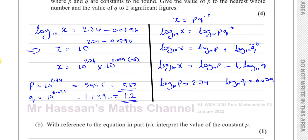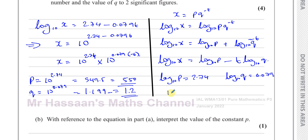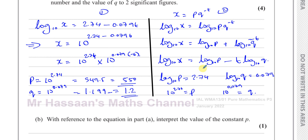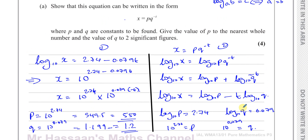Now we compare: log base 10 of p equals 2.74, so p equals 10 to the power of 2.74; and log base 10 of q equals 0.079, so q equals 10 to the power of 0.079 — exactly the same result as before. So there are two valid approaches: start from the logarithm and write in index form, or start from the index form and write as logarithms.